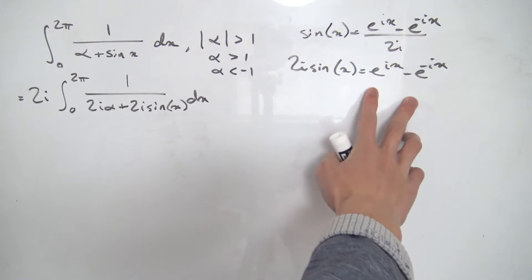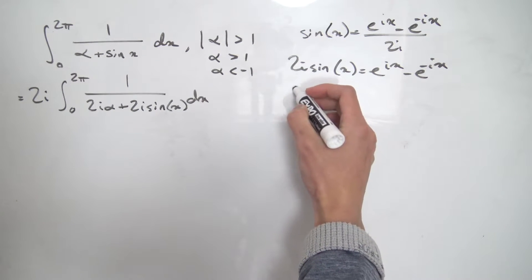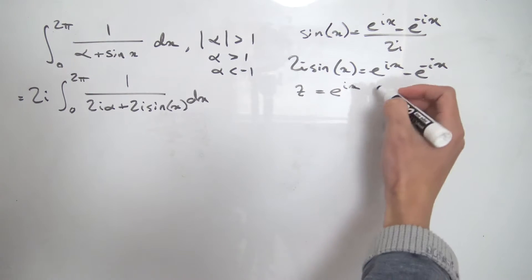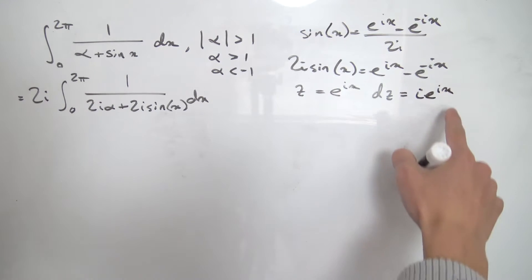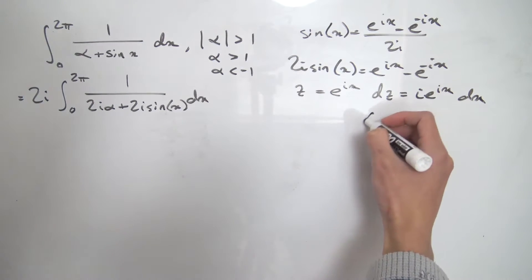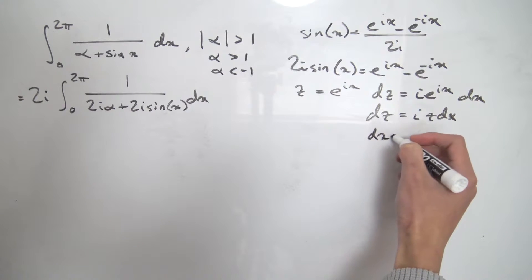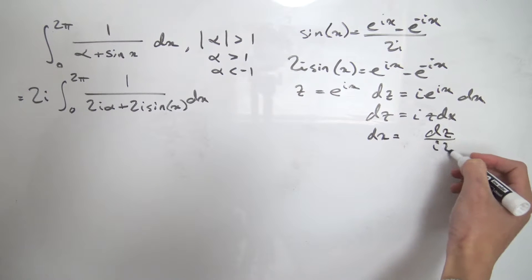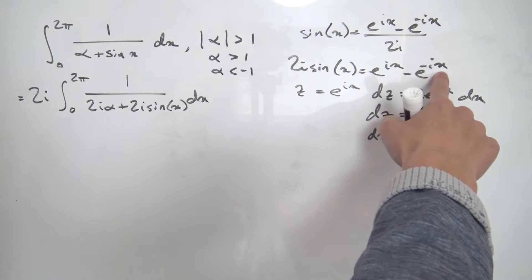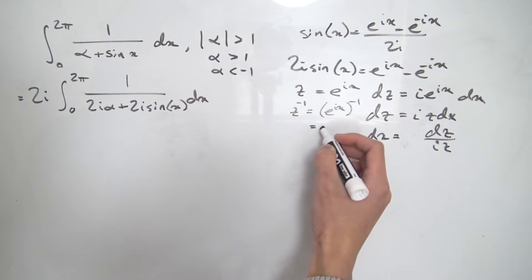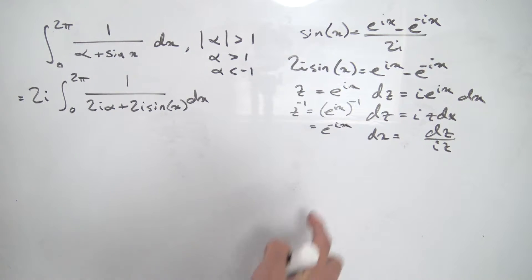We make the substitution z = e^(ix). Then dz = i·e^(ix)·dx = i·z·dx, so dx = dz/(i·z). Also, z^(−1) = e^(−ix), so e^(−ix) is just z^(−1). Now we can substitute everything in: the 2i·sin(x) term becomes z − z^(−1), and dx becomes dz/(iz).